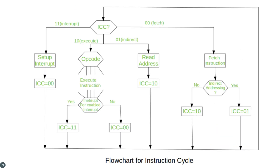Here, in this flowchart of the instruction cycle, we have assumed a new 2-bit register called the Instruction Cycle Code (ICC). The ICC designates the state of the processor in terms of which portion of the cycle it is in. The 00-bit is for the fetch cycle, 01-bit for the indirect cycle, 10-bit for the execute cycle, and 11-bit for the interrupt cycle. At the end of each cycle, the ICC is set appropriately.